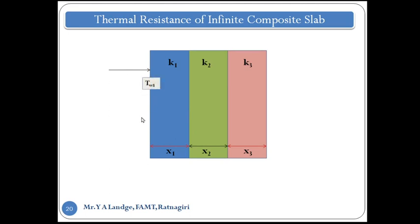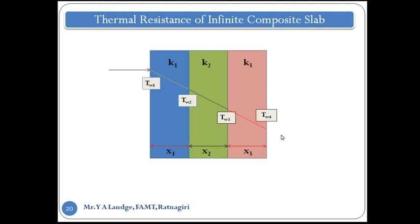The surface temperature at the left face is T_w1. Since heat flows from the hot left side to the cold right side, the temperature decreases. At the junction between the first and second material the temperature is T_w2. At the junction between the second and third slab the temperature is T_w3. And at the surface between the third slab and the fluid on the right the temperature is T_w4.